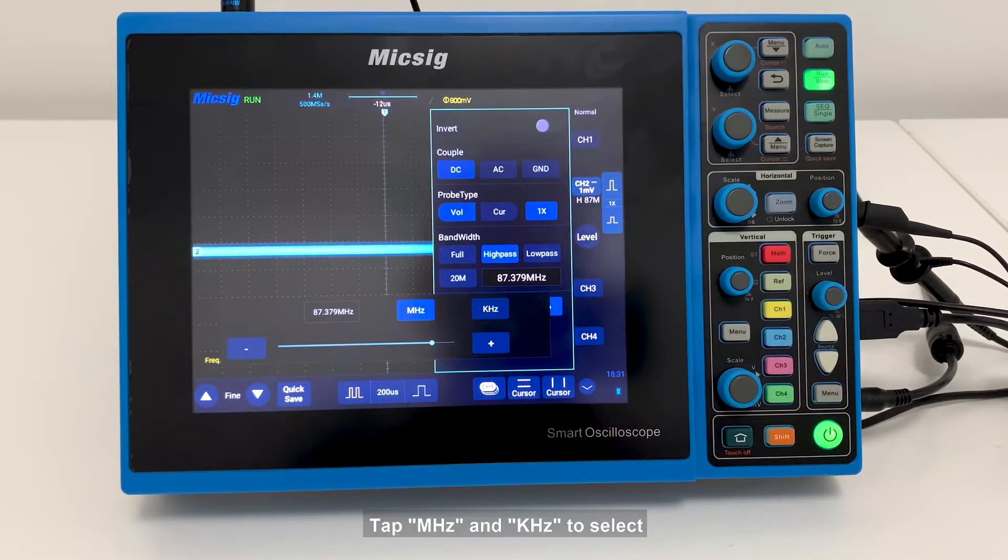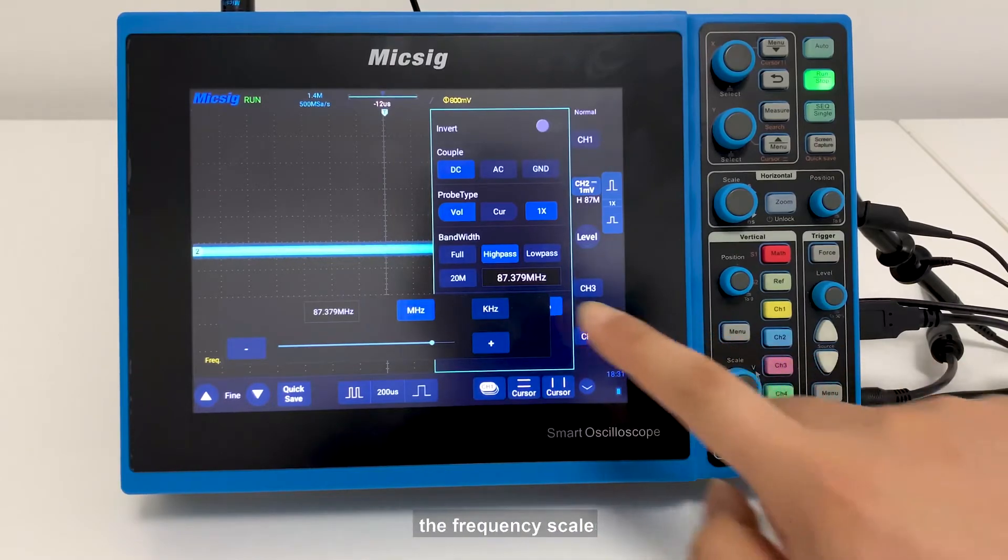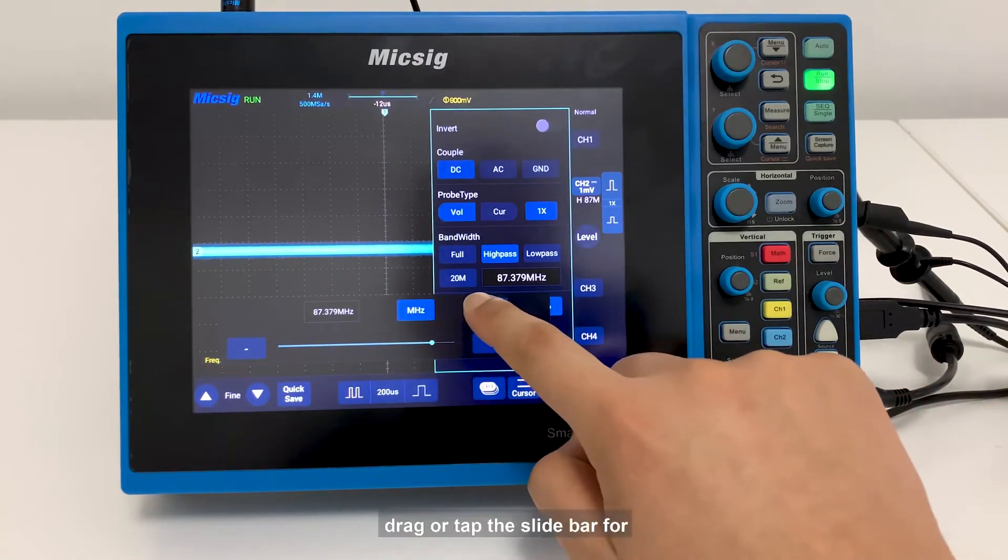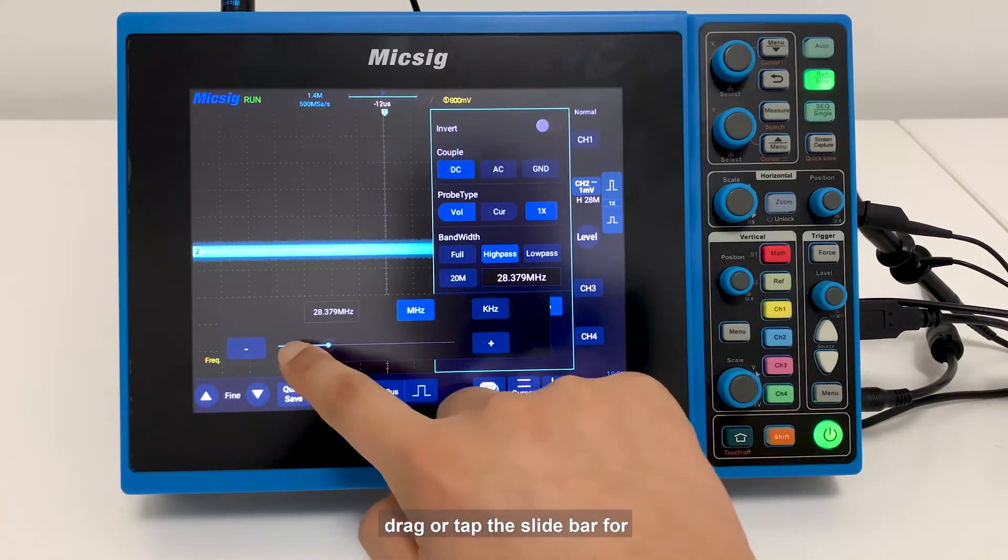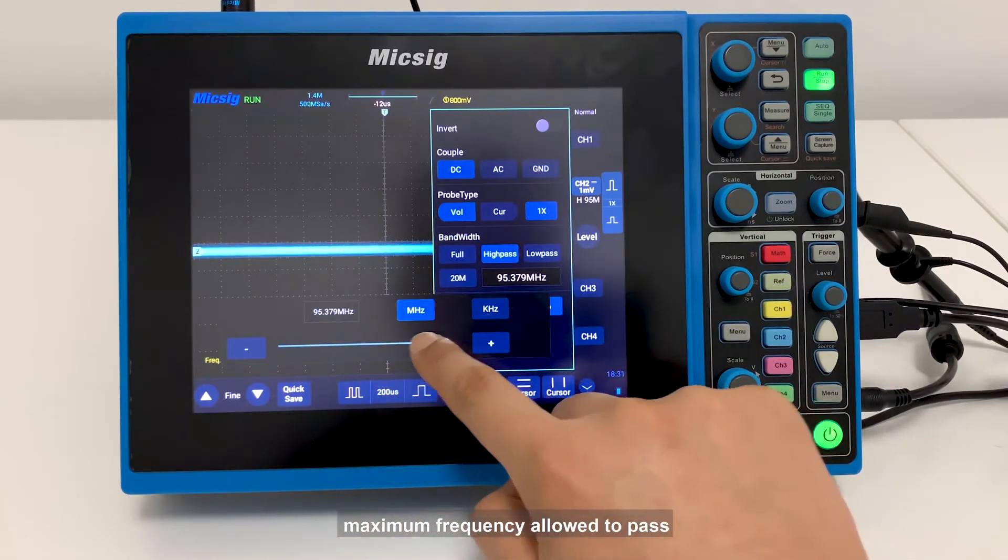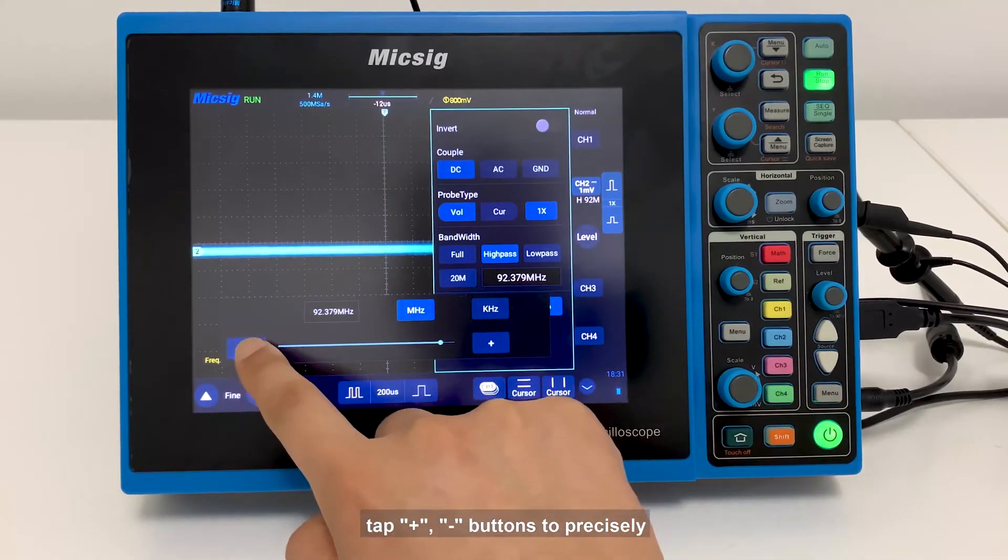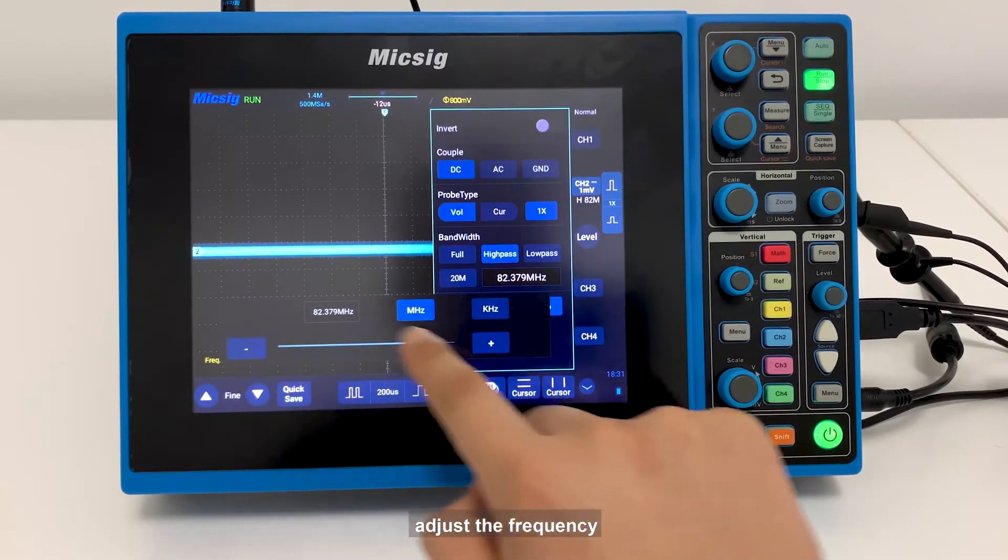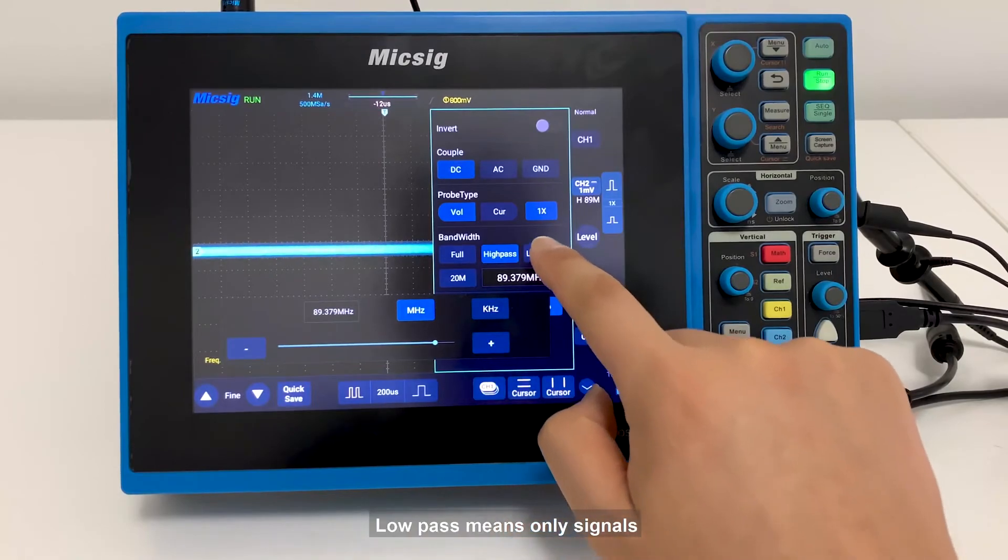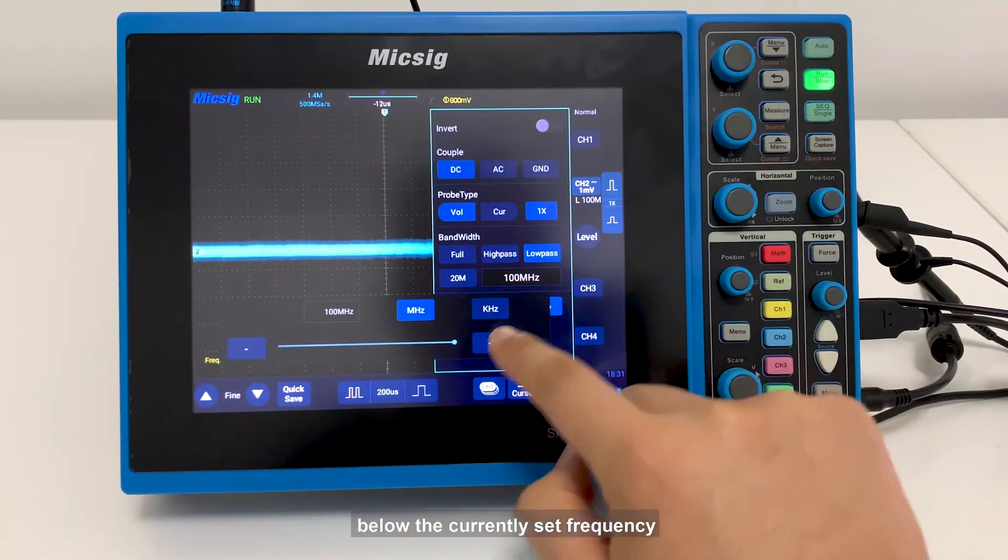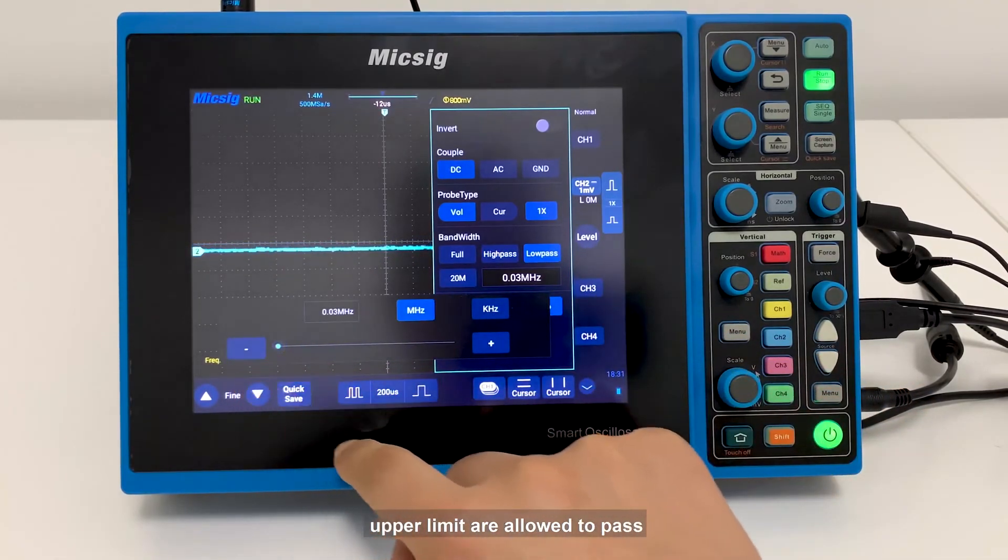Type MHz and KHz to select the frequency scale. Drag or tap the slider bar for coarse adjustment of the maximum frequency allowed to pass. Type plus, minus buttons to precisely adjust the frequency. Low pass means only signals below the currently set frequency upper limit are allowed to pass.